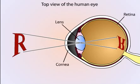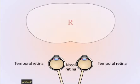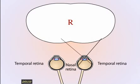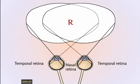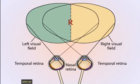The visual image focused on the retina is inverted top to bottom and reversed right to left. The part of the world that you can see without moving your head or eyes is called your visual field. Each eye sees only a portion of this visual field. The visual field can be divided into right and left visual hemifields. The right visual hemifield is seen by the temporal left retina and nasal right retina, while the left visual hemifield is seen by the nasal left retina and the temporal right retina.